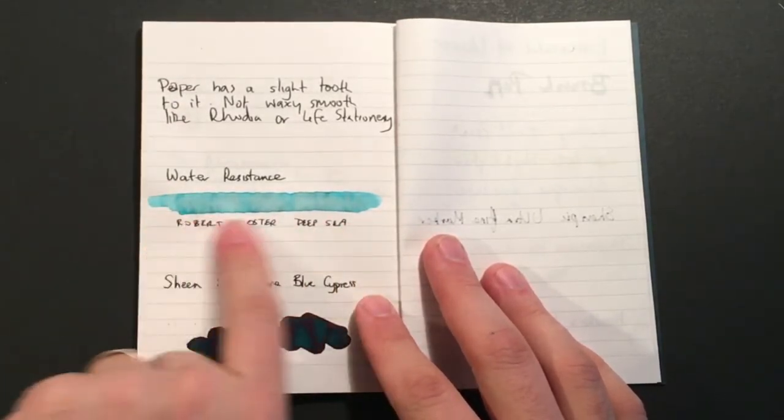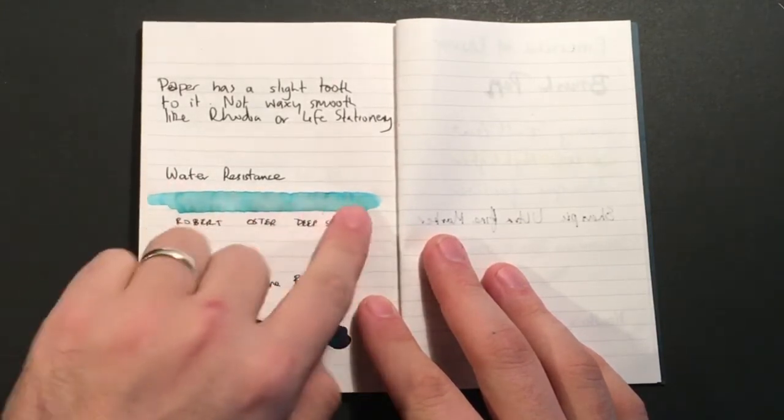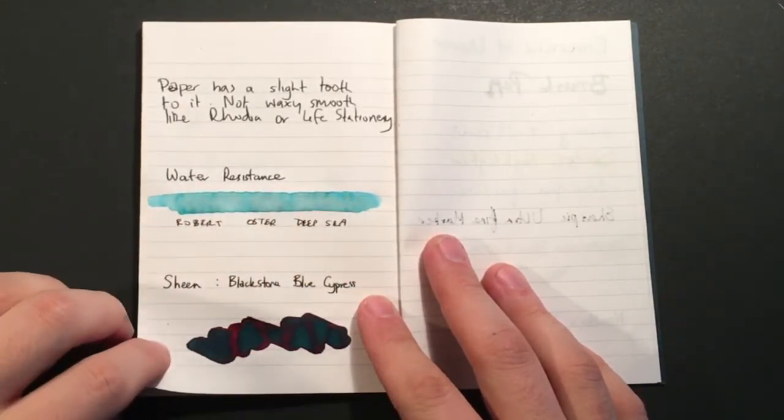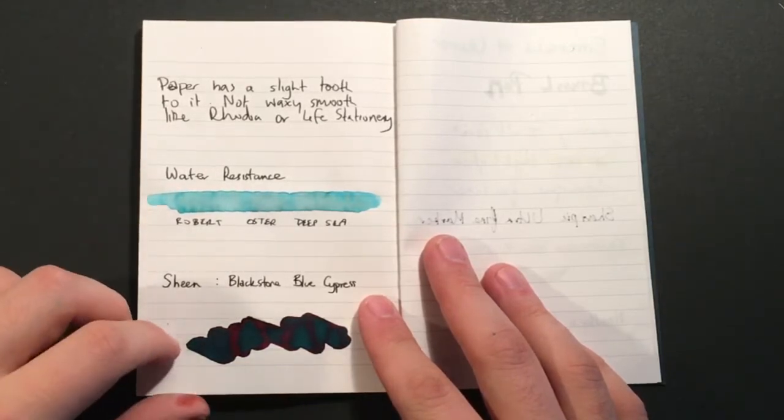In terms of water resistance, this was Robert Oster Deep Sea. As the paper is not super absorbent, we did lose most of the detail and basically treated the ink like a watercolor. It's not a water-resistant ink, but on a really absorbent paper you do still maintain some of the original detail.